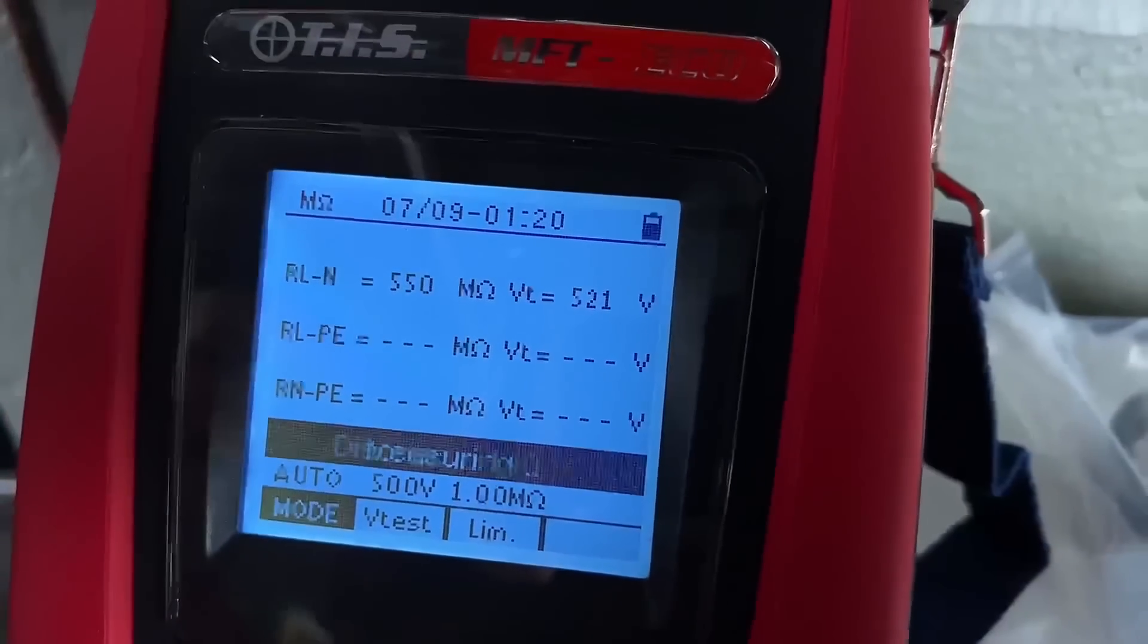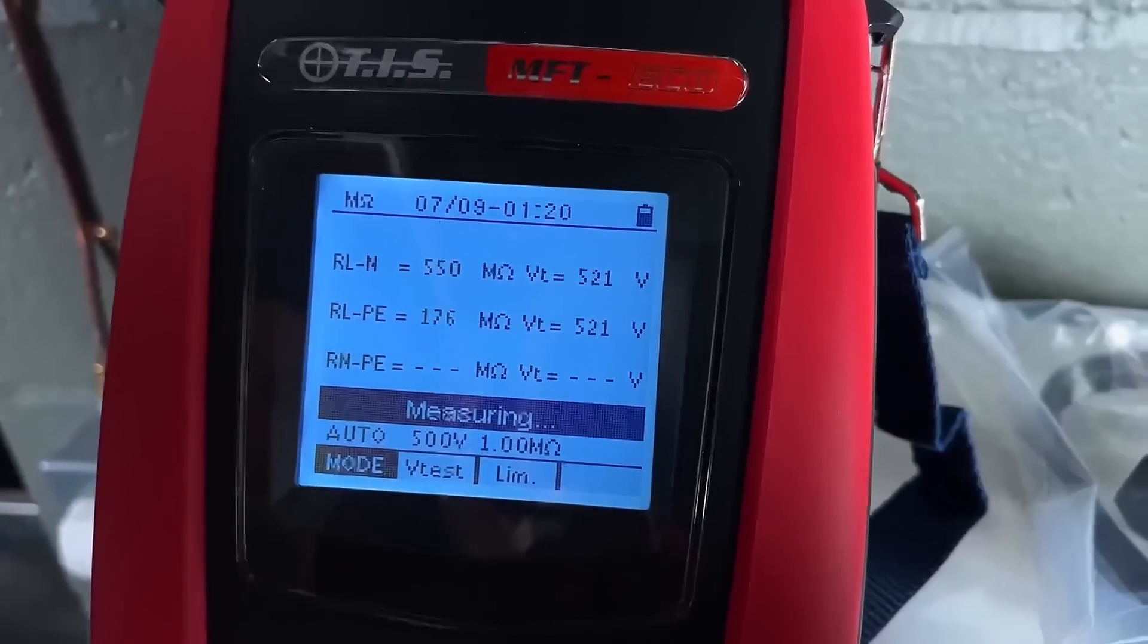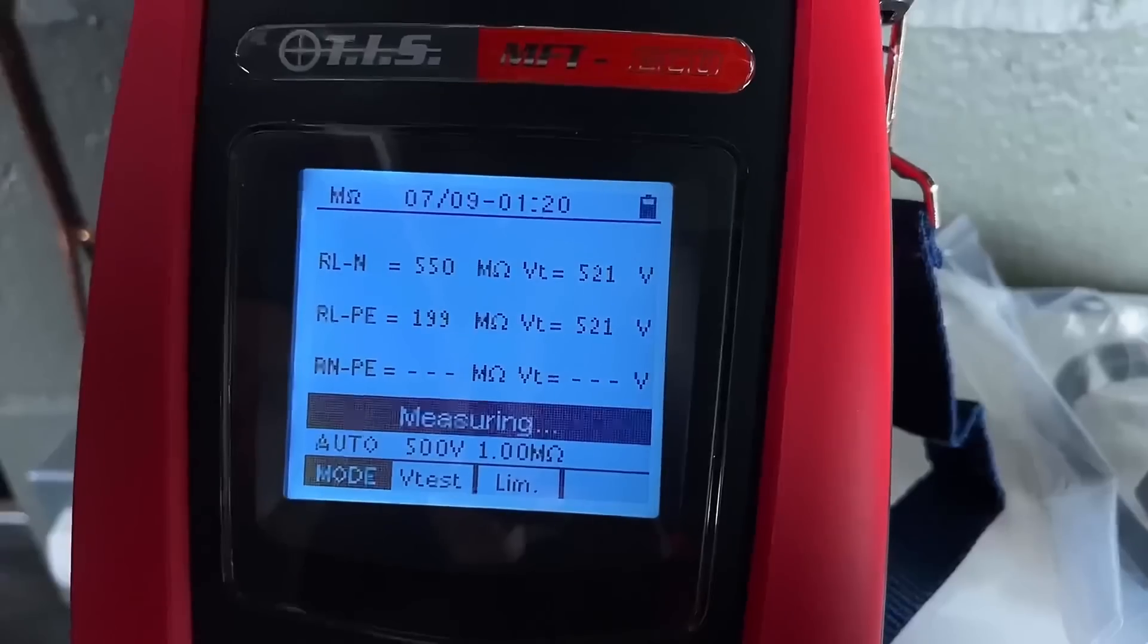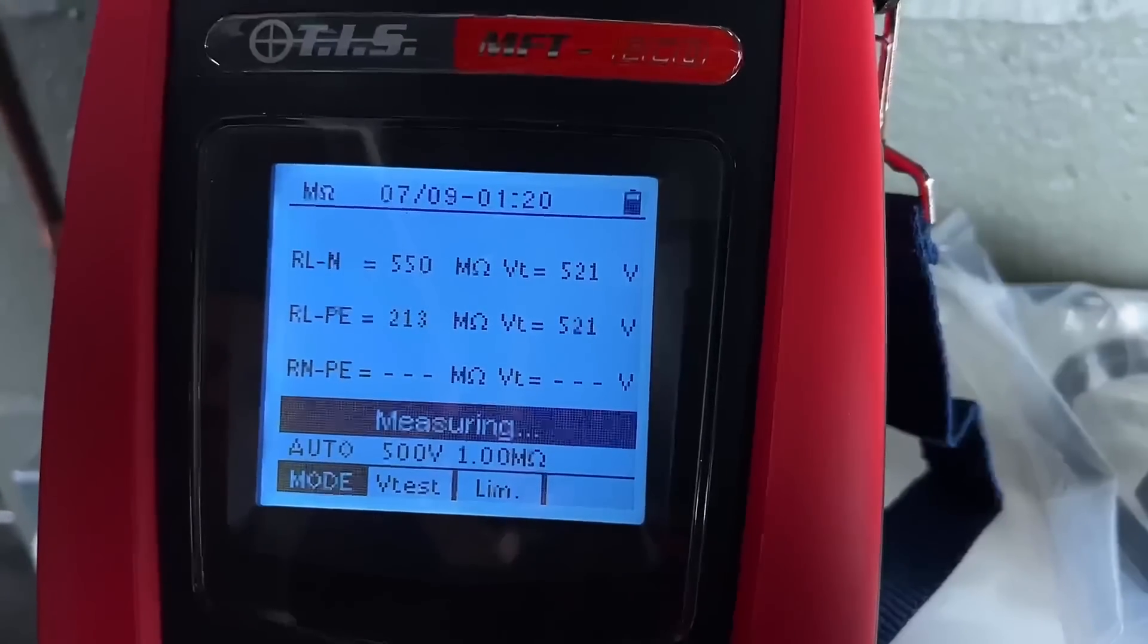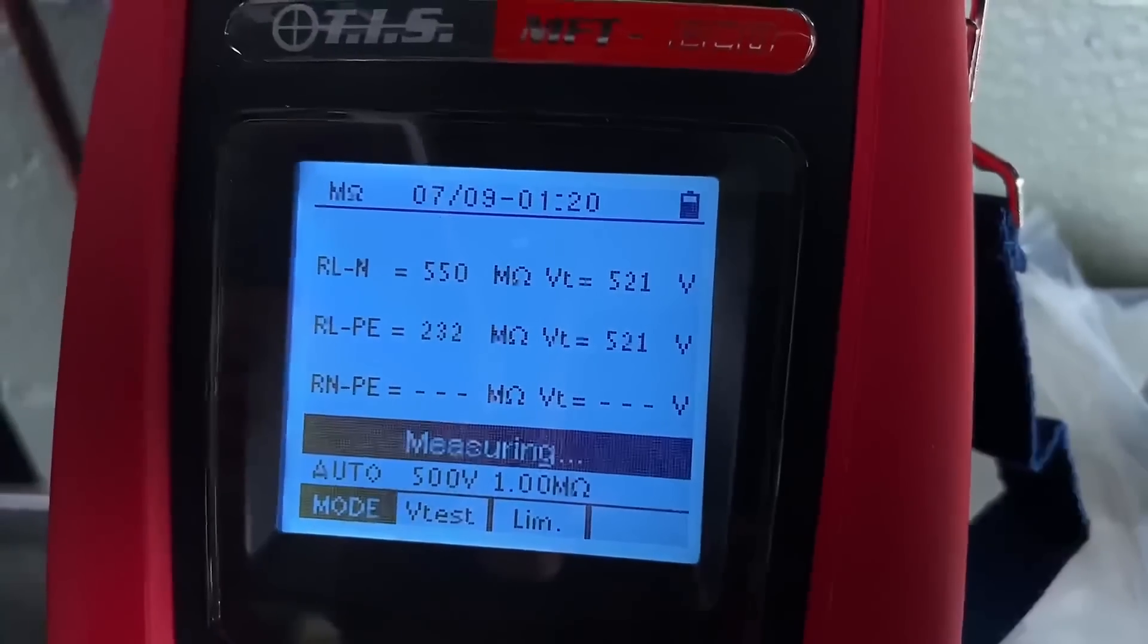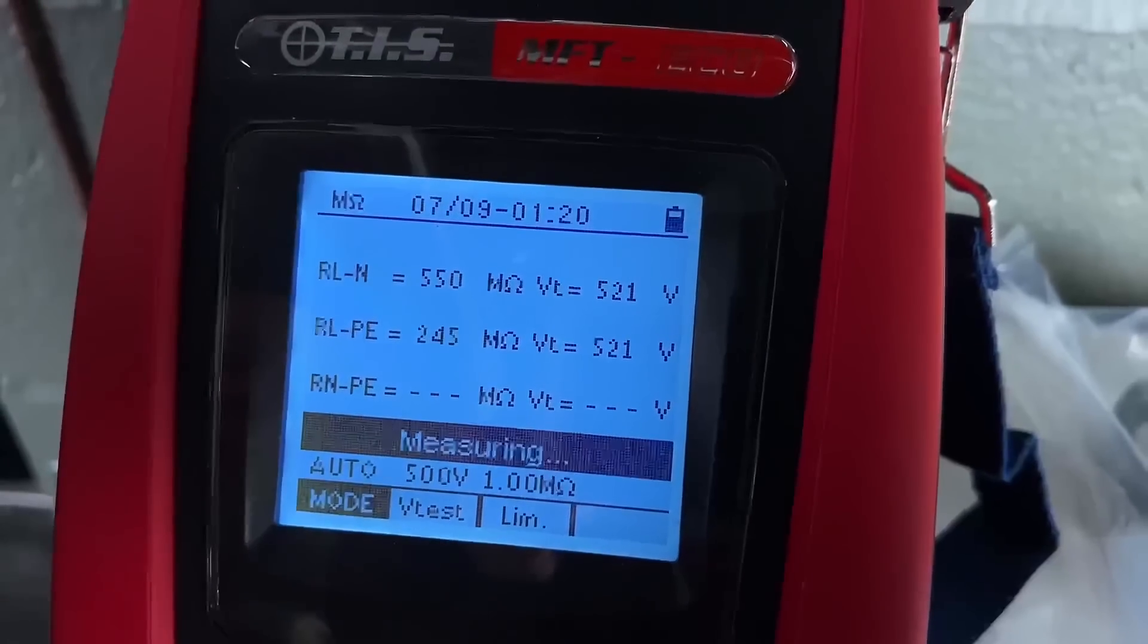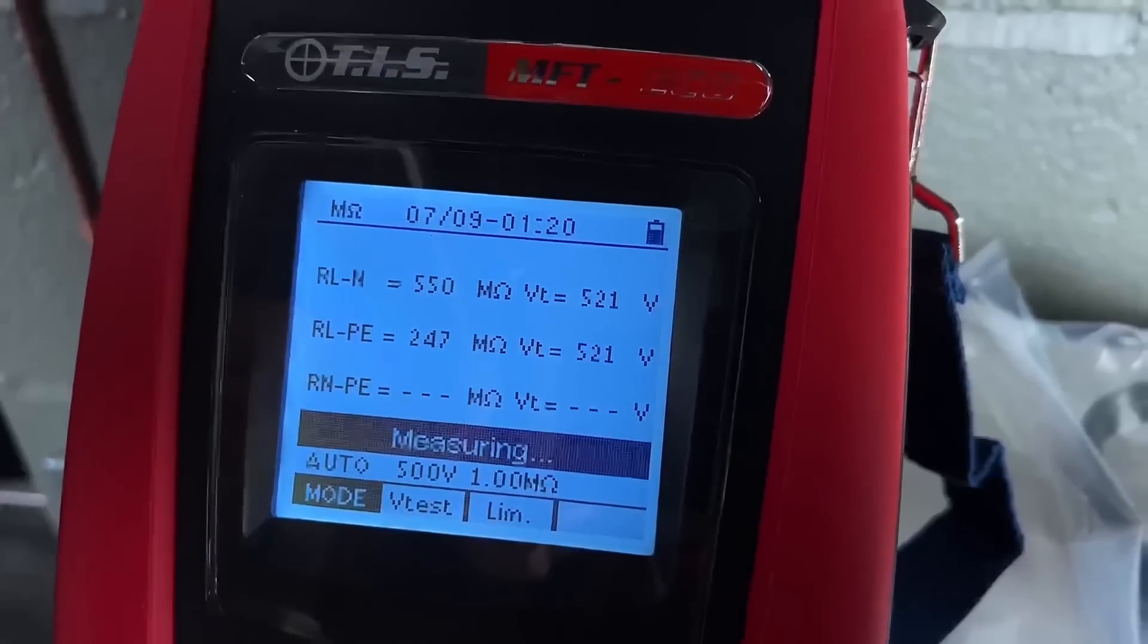Once it's happy with the line and neutral, it will drop down and do line and protective earth and then neutral and protective earth. So we've done the first one now, so it's actually tested over 500 volts and it has an insulation resistance test reading of 550 mega ohms. And now we're on to the second one and we're cycling through. So I've got my hands in the consumer unit, I'm looking at the screen here, I'm not going to press any test buttons on the machine.